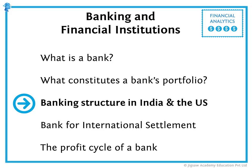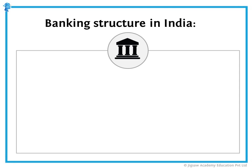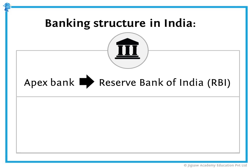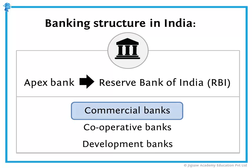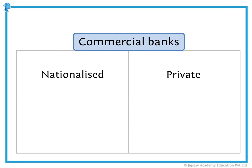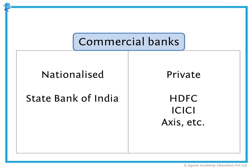Now let's look at the banking structure in India. The Apex Bank is the Reserve Bank of India. The other types of banks which work in our economy are commercial banks, cooperative banks, and development banks. We will deal extensively only with commercial banks because cooperative banks and development banks have very strict charters, and their main aim may not always be to make profits. Commercial banks can be of two types — nationalized and private. The largest nationalized bank is the State Bank of India, and in the private sector we have HDFC Bank, ICICI Bank, Axis, etc.